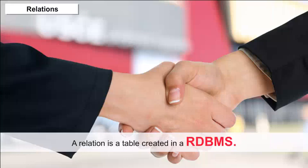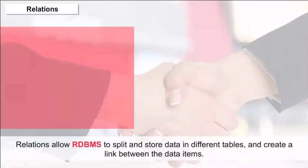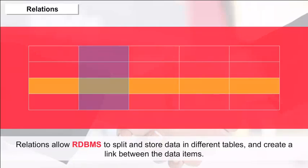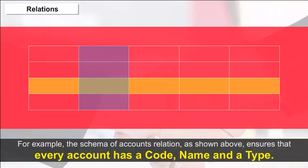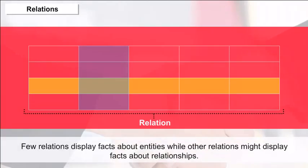Relations — a relation is a table created in a RDBMS. Relations allow the RDBMS to split and store data in different tables and create a link between the data items. For example, the schema of the accounts relation, as shown above, ensures that every account has a code, name, and a type. Some relations display facts about entities while others display facts about relationships.